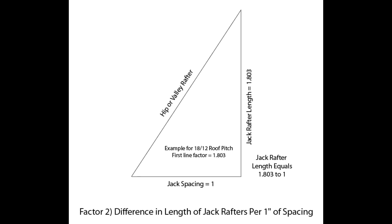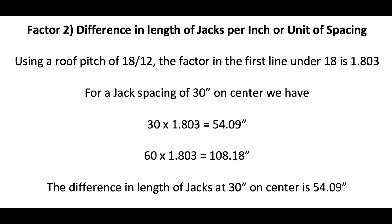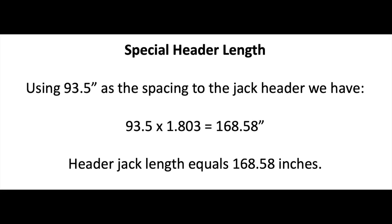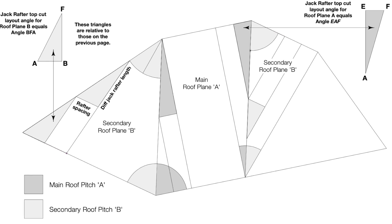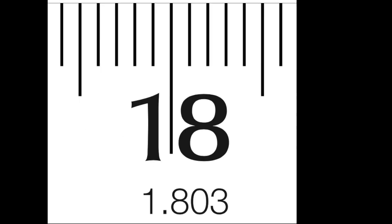Example. Using the same factor in the example for a common pitch of 18 over 12, let's say we have a rafter spacing of 30 inches on center from the corner of the building. This puts the first jack at 30 inches, the second at 60, etc. Let's also say there will be a header placed at 93.5 inches. We can find all these lengths using this factor. The value in the column under 18 is 1.803. The length of the two jacks would be as follows.